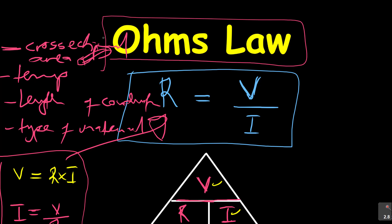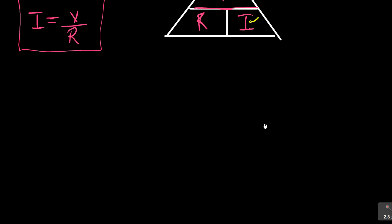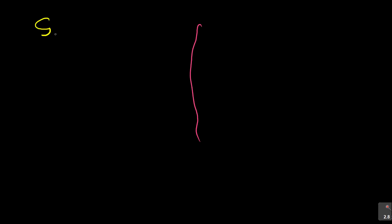With Ohm's Law, something very important is understanding two types of resistors. We have what is called series and what is called parallel. Let's quickly look at this.